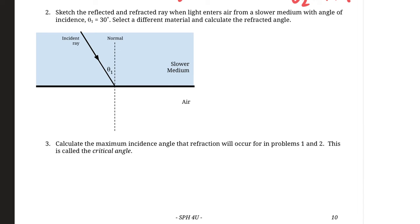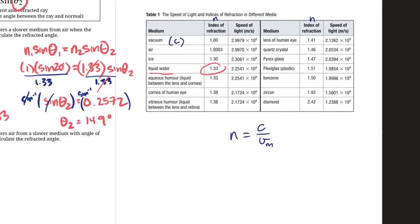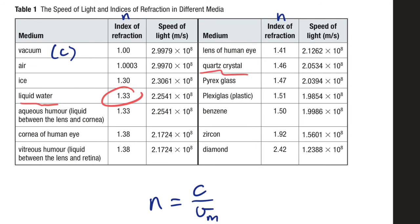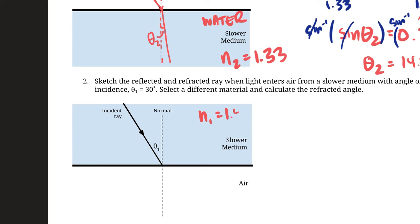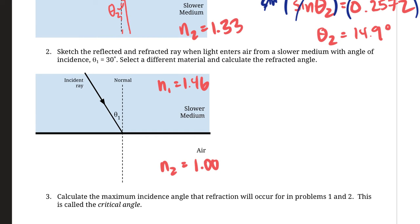The second question has light going from a slower medium to a faster medium — air. Let's pick quartz crystal, which is a clearish crystal sometimes used in jewelry. The index of refraction for quartz is 1.46, so n₁ = 1.46 and n₂ = 1.00 for air. The incidence angle is 30 degrees. Try solving for the refracted angle and sketching what it will look like when light enters a faster medium.